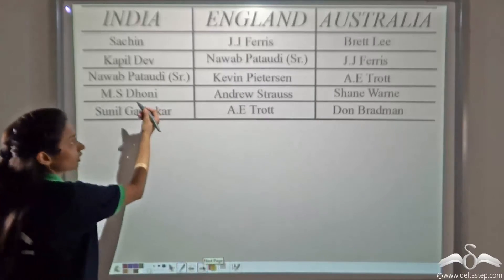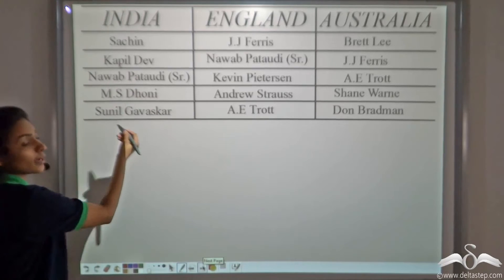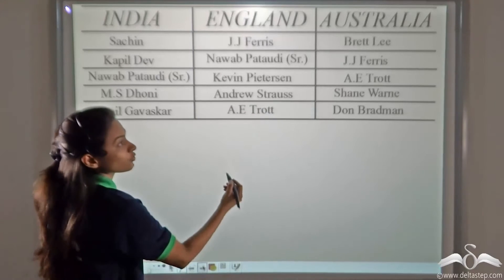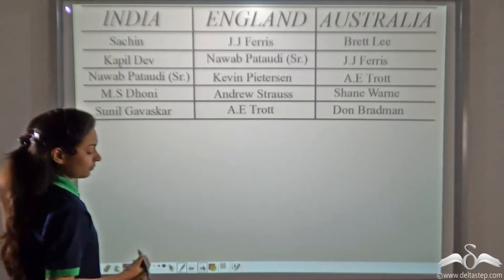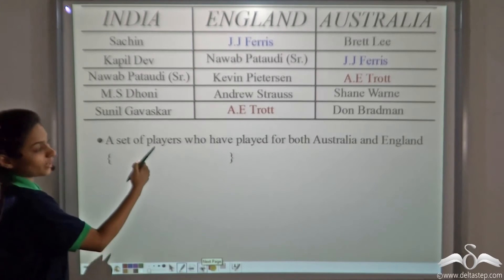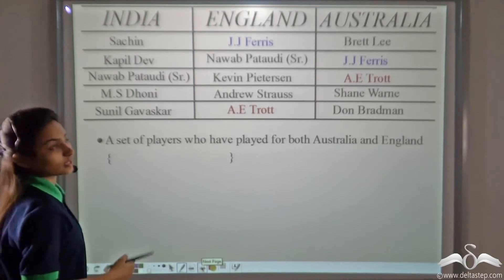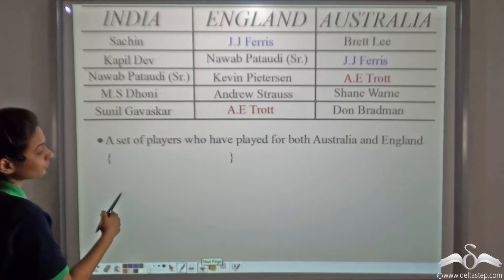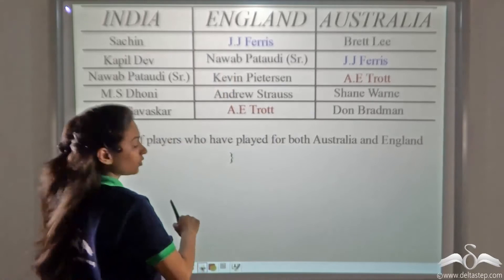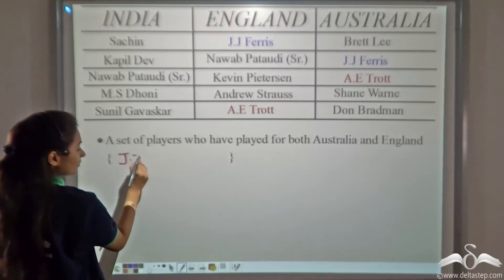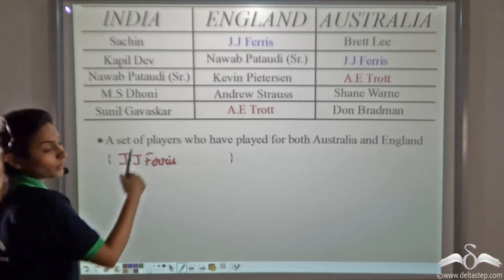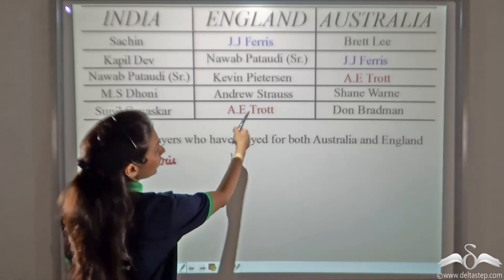Here we have cricket players who have played for India, players who have played for England, and players who have played for Australia. If I ask you to name the set of players who have played for both Australia and England — J.J. Ferris has played both for England and Australia, so we write J.J. Ferris. There is one more player, A.E. Trott, who has also played for both England and Australia.